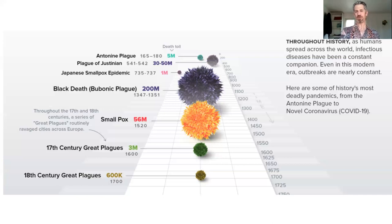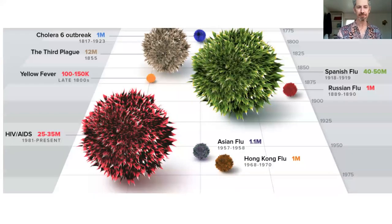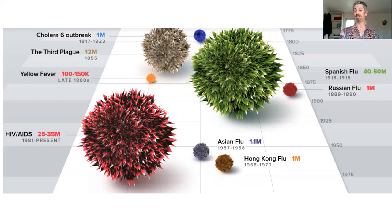Then we jump to 1520, where we have an outbreak of smallpox again. Then the 17th century great plagues — one broke out outside of Milan, where the COVID outbreak is happening right now. So unfortunately, Milan was also a site of plagues back then. In the 18th century there was a reemergence of plagues, then a series of cholera outbreaks collectively taking about a million lives, then what is called the third plague around the 1850s, and then yellow fever in the late 1800s with about 150,000 deaths — the result of mosquitoes as vectors of disease.